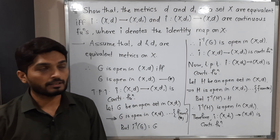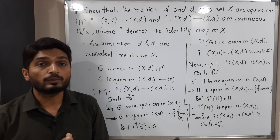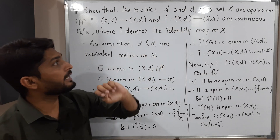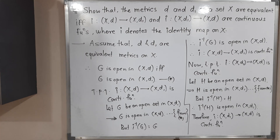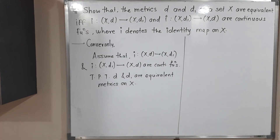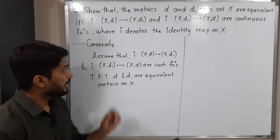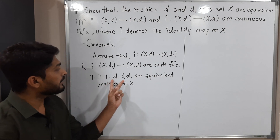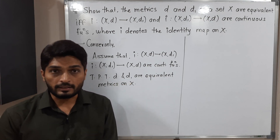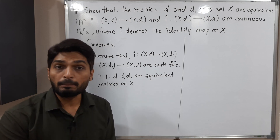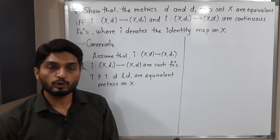Now we prove the converse. We assume that i from (X,d) to (X,d1) and i from (X,d1) to (X,d) are both continuous identity functions, and we have to prove that d and d1 are equivalent metrics. That means we must show: any set open in (X,d) is open in (X,d1), and vice versa.